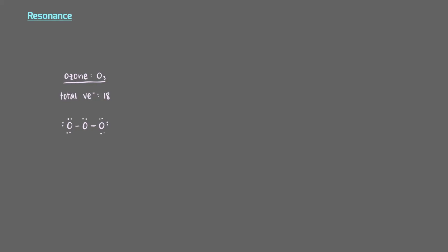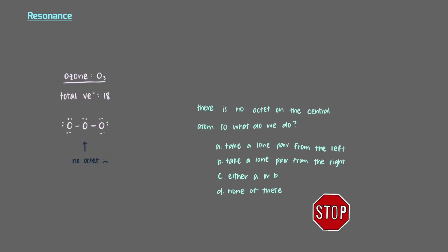Here's an almost complete Lewis structure for ozone, or O3, but there's no octet on the central atom. So what do we do? The answer is both. Well, neither. Well, actually, it's pretty complicated. Let's investigate.